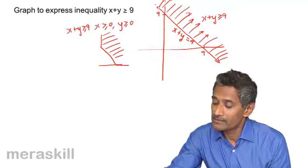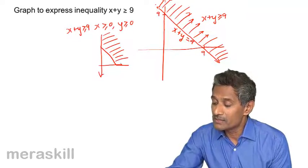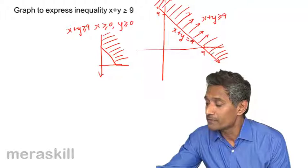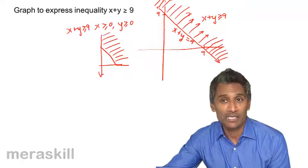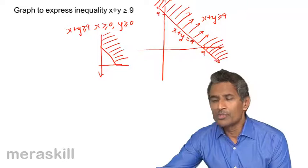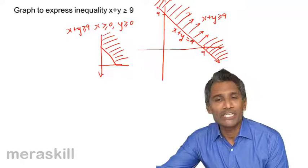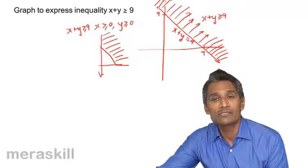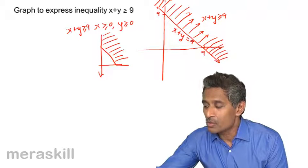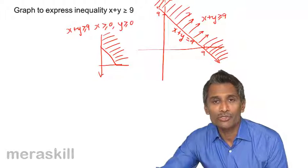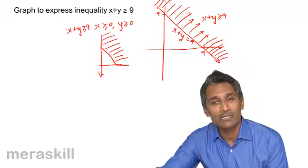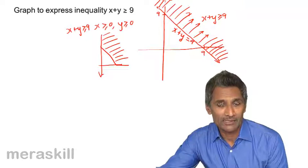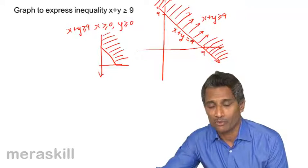To reinforce: if we also exclude the regions to the left of the y-axis and below the x-axis — that is, adding x greater than or equal to 0 and y greater than or equal to 0 — then we get only the triangular region in the first quadrant. Otherwise, as per the question, we shade the full non-origin side. The region moving away from the origin is the greater-than area; the region closer to the origin is the less-than area.